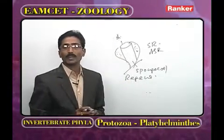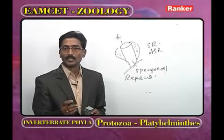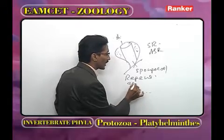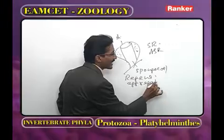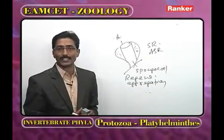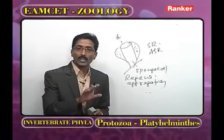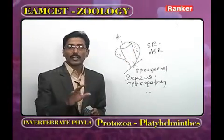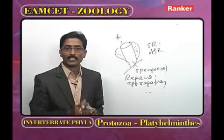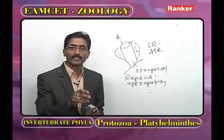Sponges have a remarkable power of regeneration — to regain lost parts — also followed by aggregation of cells. All Porifera are bisexual; there is no difference between male and female. Fertilization is cross and internal, meaning it takes place inside the body.